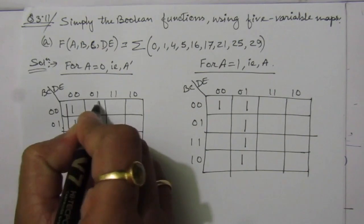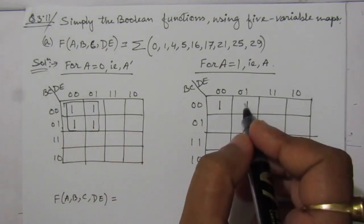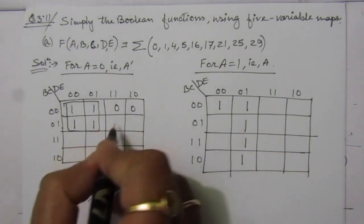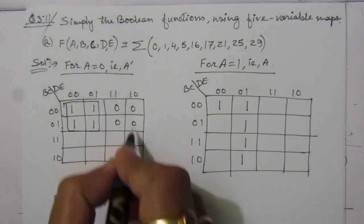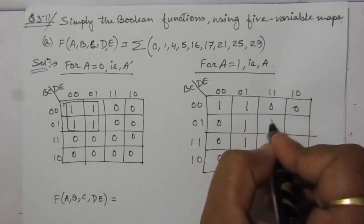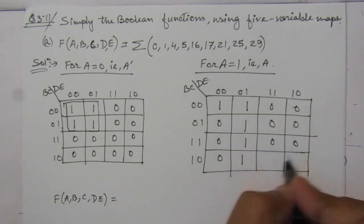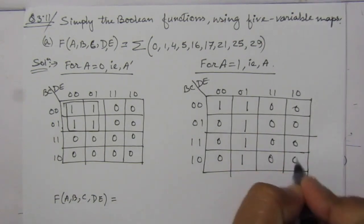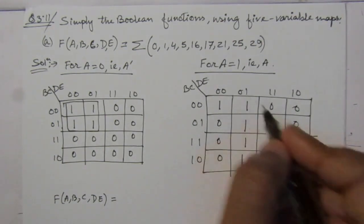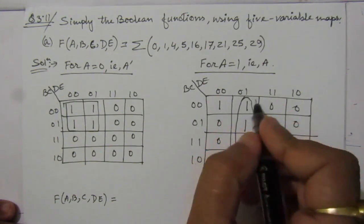We can combine the minterms like this — this is one map. The other values are 0 here, and I am just filling them in with 0s. From this map we can combine the groups, and for the second map we can combine like this.